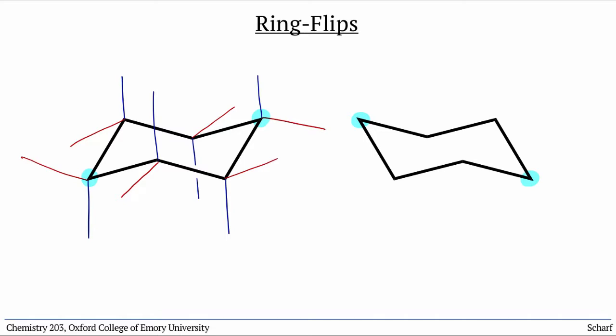Then, we add in all the substituents, remembering that ring-flips take axial substituents and put them equatorial, and vice versa, but the up or down directionality doesn't change.